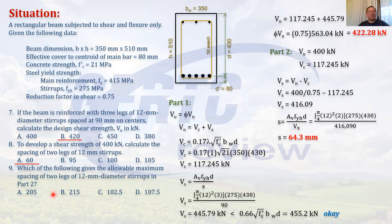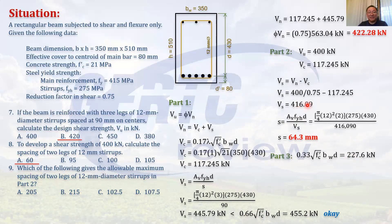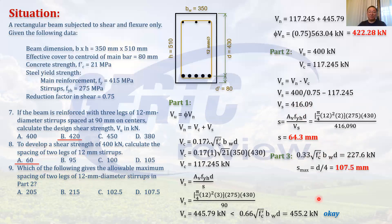Part three: the maximum allowable spacing of the stirrup. This depends on checking Vs against 0.33√fc' · bw · d. Half of that limiting value is 227.6 kN. Our Vs from part 2 is 416 kN, which is more than 227.6 kN. Therefore, since Vs exceeds that threshold, the maximum spacing is d/4 — not d/2. So maximum spacing = d/4 = 430/4 = 107.5 mm. The answer is letter D.